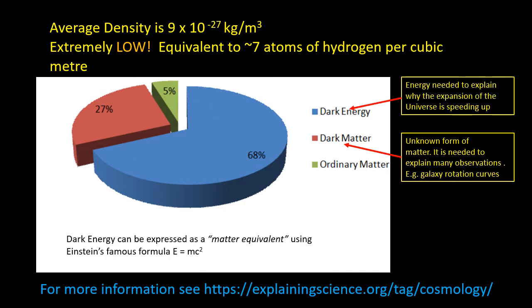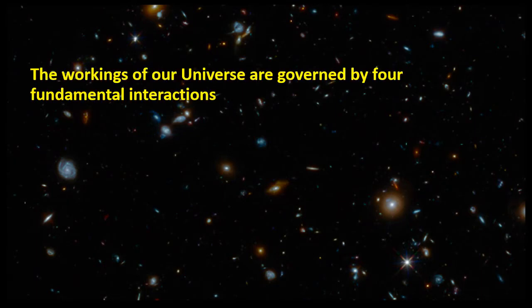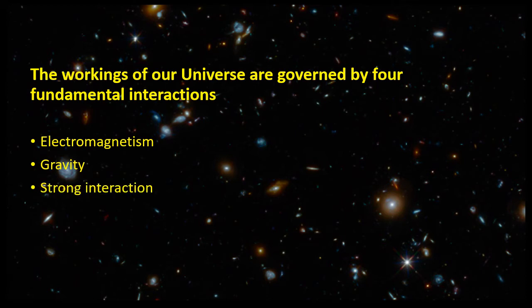And this is the thing which is causing the universe to expand, to speed up. So although it's energy, Einstein told us that matter and energy are equivalent by E equals mc squared. It has a mass equivalent of 68% of the mass of the universe. The workings of our universe are governed by four fundamental interactions, which are electromagnetism, gravity, the strong interaction, and the weak interaction.